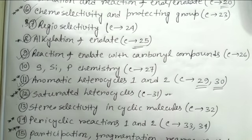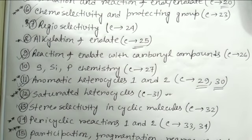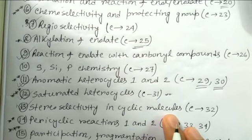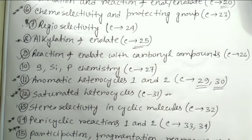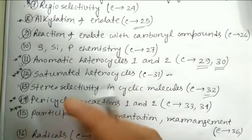The chapter on stereoselectivity in cyclic systems is very important, and the drawings in Clayden are very nice - that's why I'm suggesting reading it here rather than from other books like Carruthers or Nasipuri. The representation of the drawings will attract your attention and help you understand these things. This is chapter number 32.